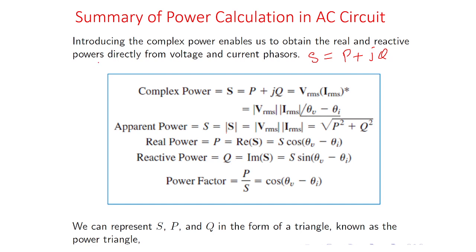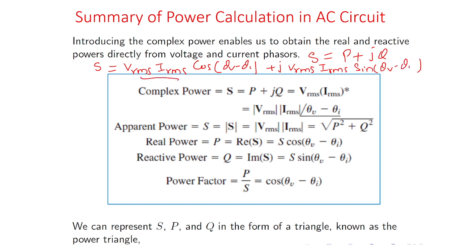So we have S = VRMS·IRMS·cos(θv − θi) + j·VRMS·IRMS·sin(θv − θi). The real part P is the real power and the reactive part Q is the reactive power, caused by inductive or capacitive reactance. Real power is only due to resistance. Power factor is cos(θv − θi), which equals the ratio of real power to apparent power, since S cancels out.